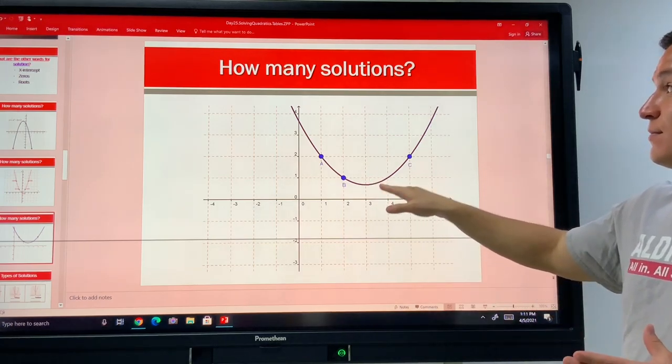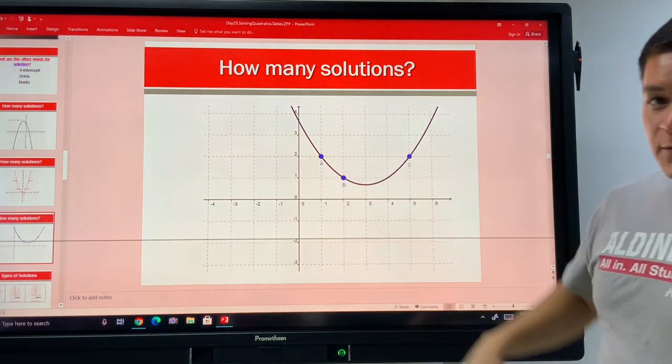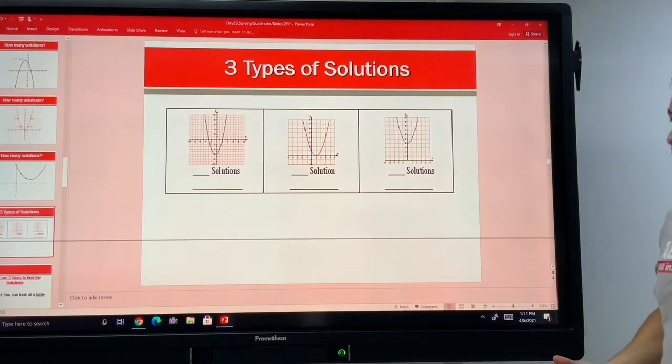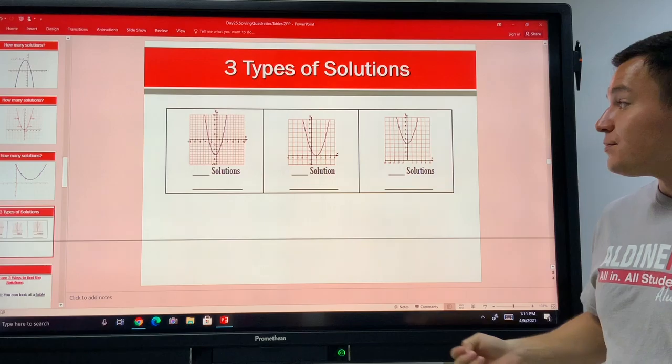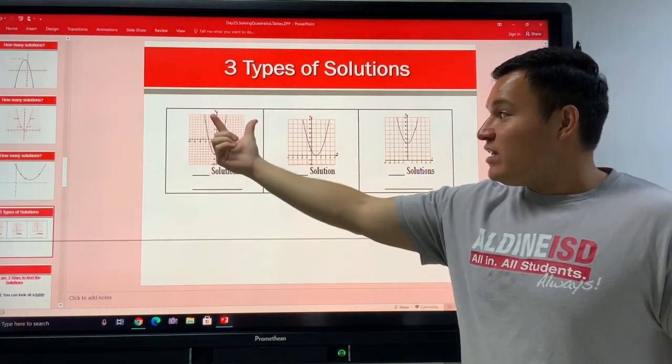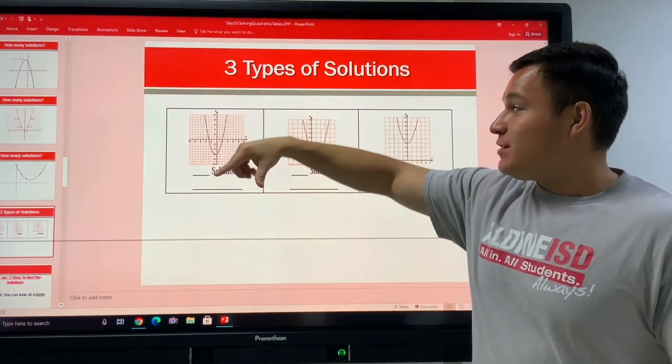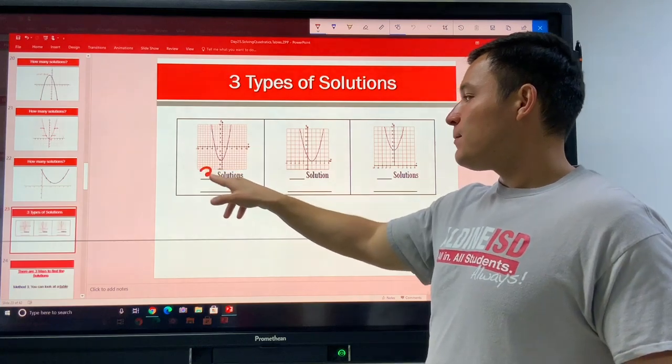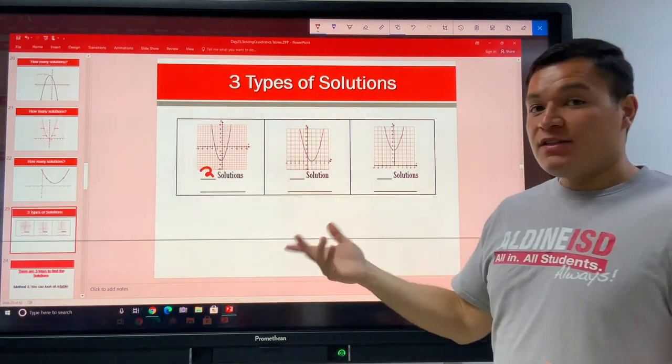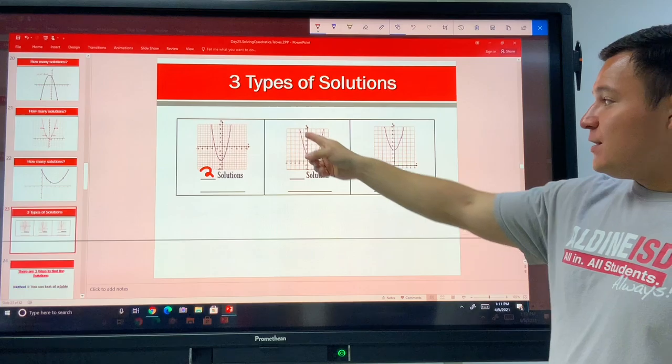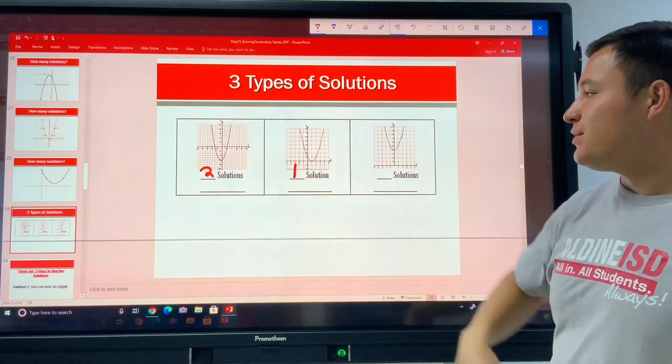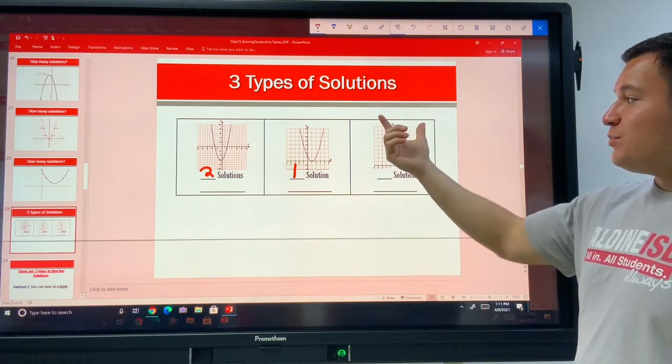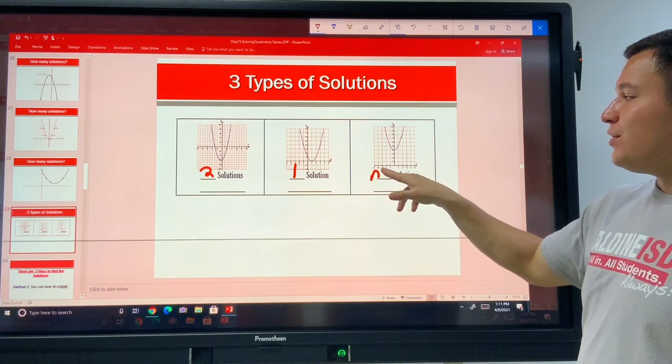So let's label that. This is in the quadratic booklet, or you can just be copying down these notes. If the parabola is opening upwards or downwards, but it's shifted in a way that there are two solutions, you can see the two solutions. If you can see the parabola and the graph only touches it one time, then there's one solution. If you see the graph of a parabola and it's shifted up or down and it's opening away from the x-axis, then there are no solutions.